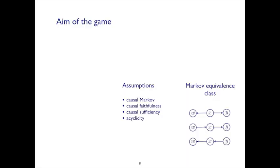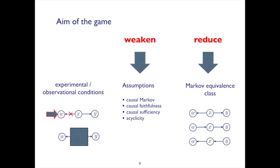So for someone who works in causal methodology like I do, what is the aim of the game? An equivalence class of causal structures is nice, but often we want to know something more about the detail of the causal structure — we want to get the orientations resolved. We might want to weaken or generalize the assumptions, or take different sets of assumptions. And we might also consider the experimental or observational conditions under which we've collected the data and generalize those — as in the last talk about meta-analysis, integrating data from different conditions.